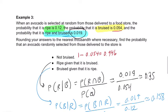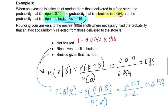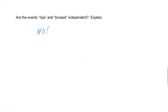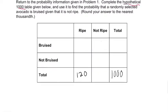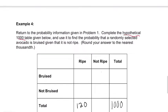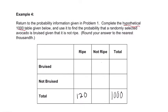Then we're told that the probability that it's bruised is 0.054. Okay, did I say that right? 0.054. No, I did not say that. That's 5.4%. So 5.4% of all the avocados are bruised, so about 54.